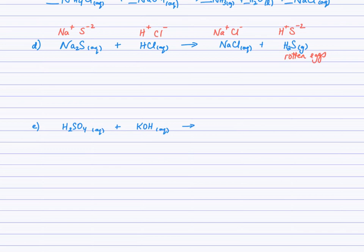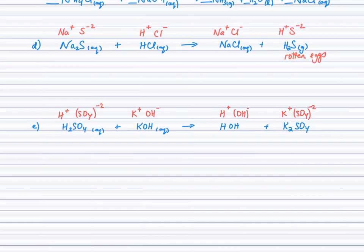Last example, part E: undo the compounds to find the ions — H⁺ and sulfate from H2SO4, K⁺ and hydroxide from KOH. Switching partners gives H⁺ and OH⁻, which when crossed down gives HOH — written as H2O, liquid water. The second product is K2SO4. Any compound with potassium up front is definitely aqueous, so there's our potassium sulfate.